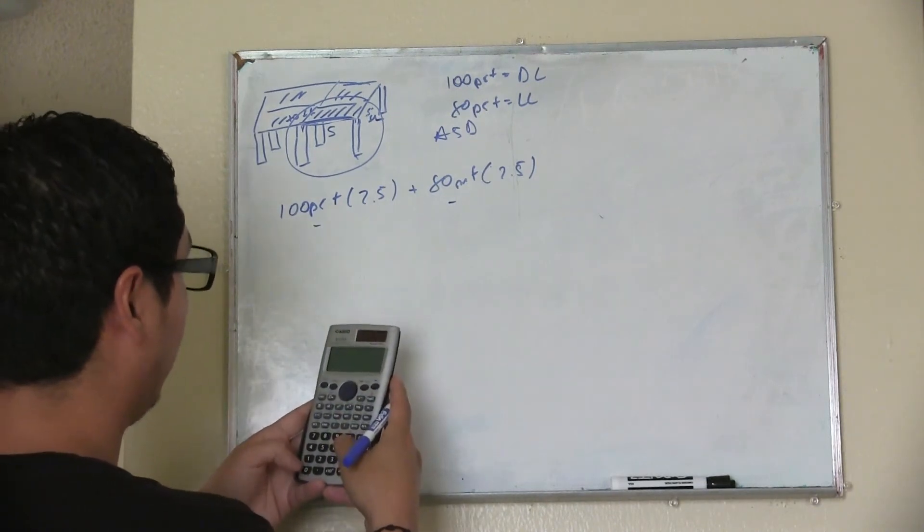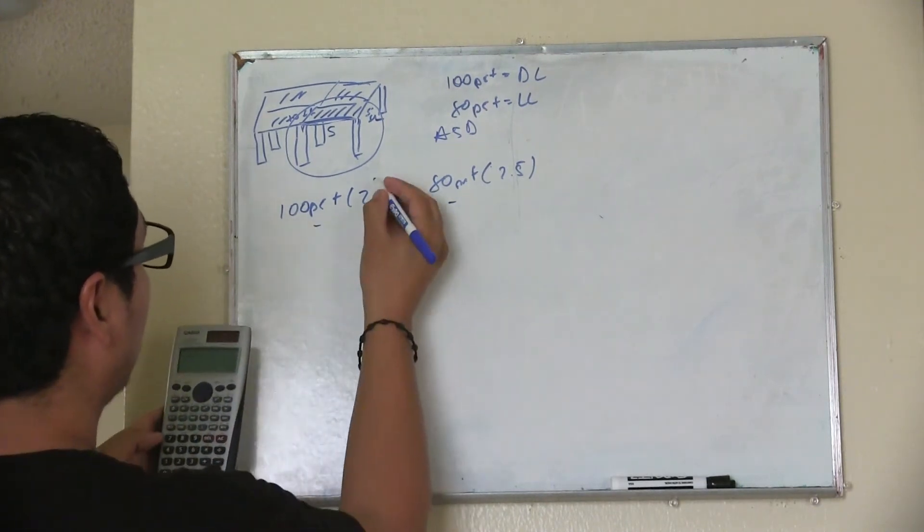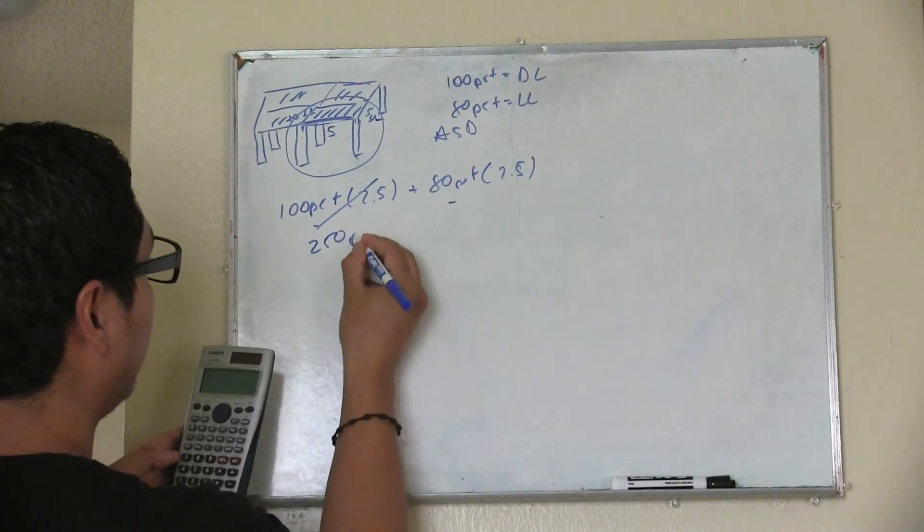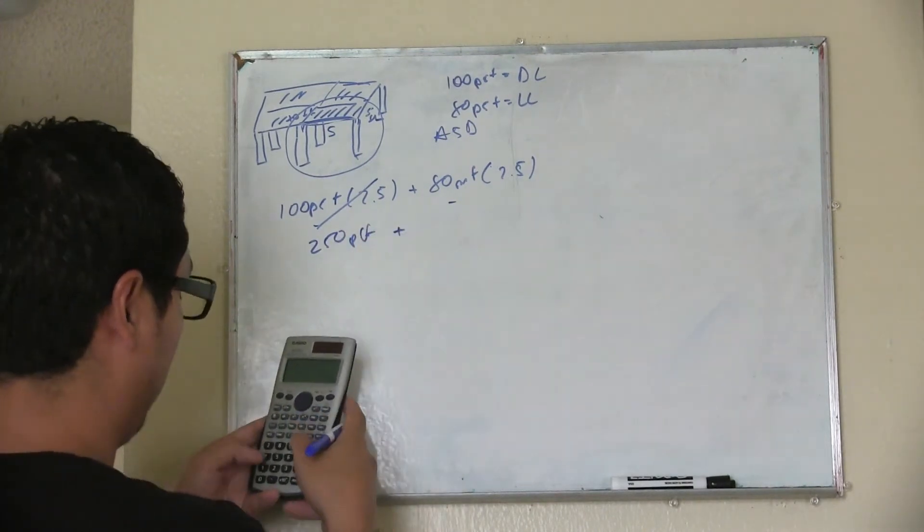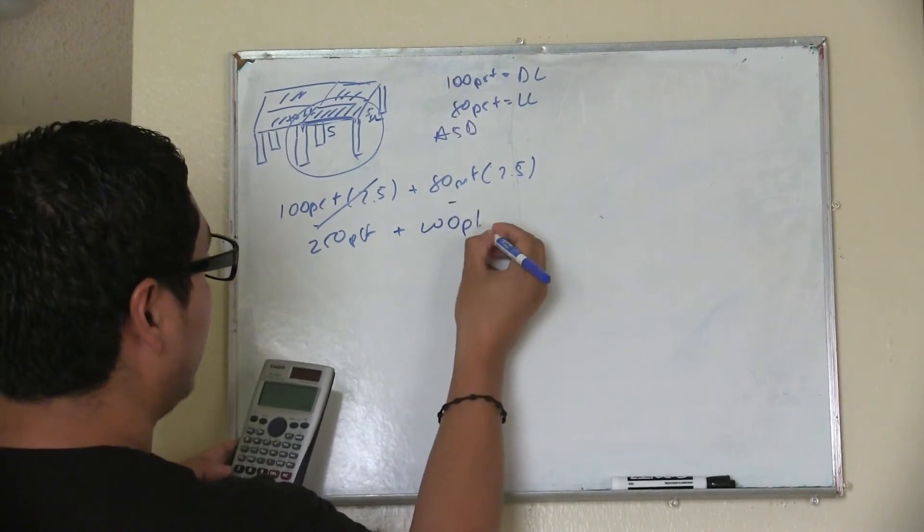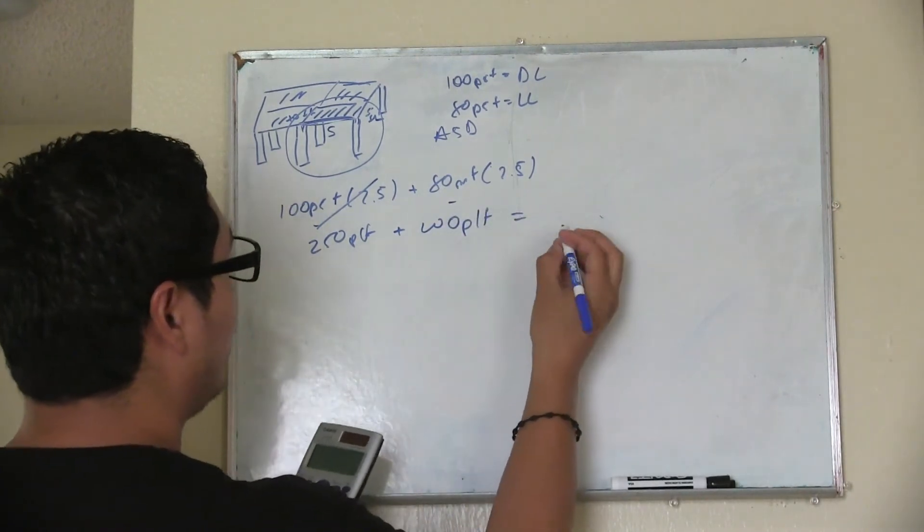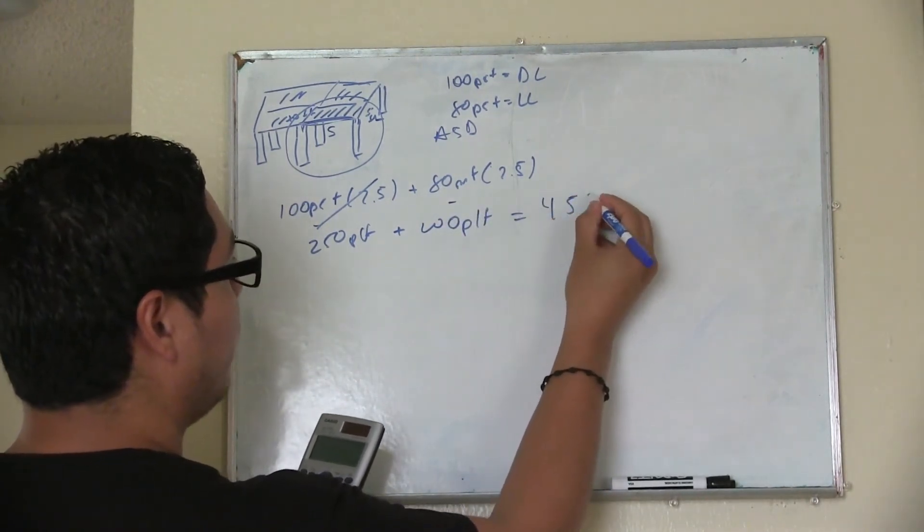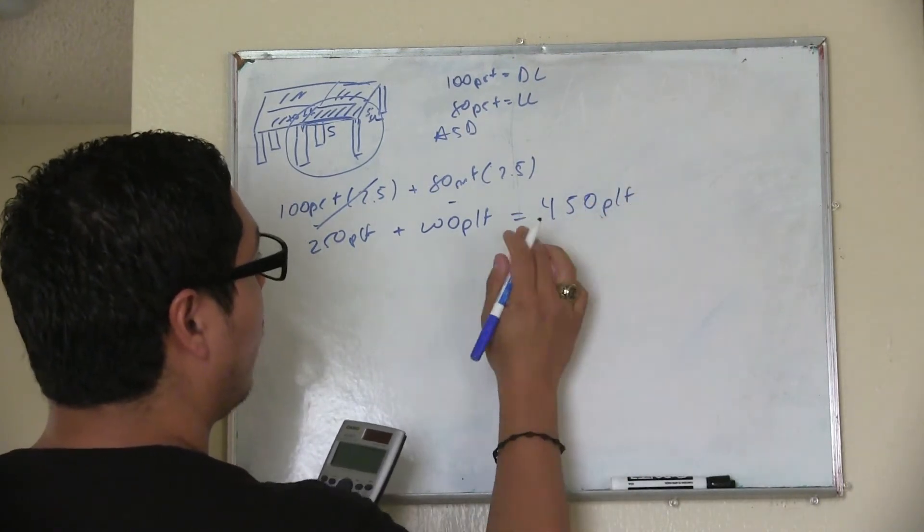So 10 times 2.5 equals 25 PLF, plus 80 times 2.5 equals 200 PLF. So you're going to have a linear load of 225 PLF going into this beam.